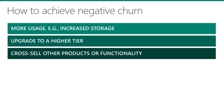One way to achieve negative churn is to increase customer usage. When you look at businesses like OneDrive, a big part of this strategy is to help customers find new ways to use more storage. A lot of products have multiple tiers, going from freemium to silver to gold to platinum. This is where farmers are invaluable, helping customers justify using more features that will move them into a different tier. Many SaaS companies also have a family of products — for example, a lot of ERP vendors have CRM, HR, and other products that they can upsell to existing clients.